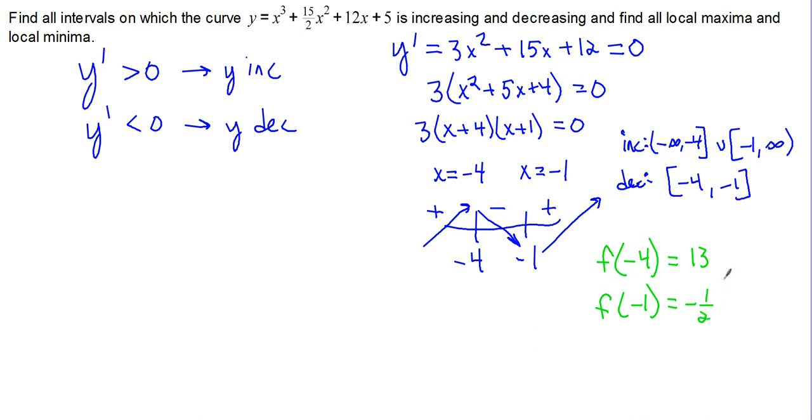So we have a local max of 13 at x equals negative 4. And we have a local min of negative 1 half at x equals negative 1.